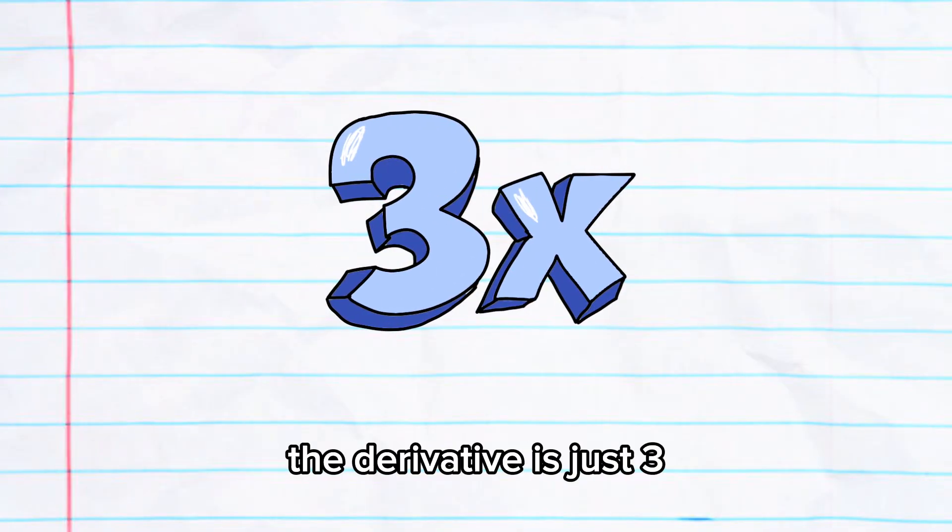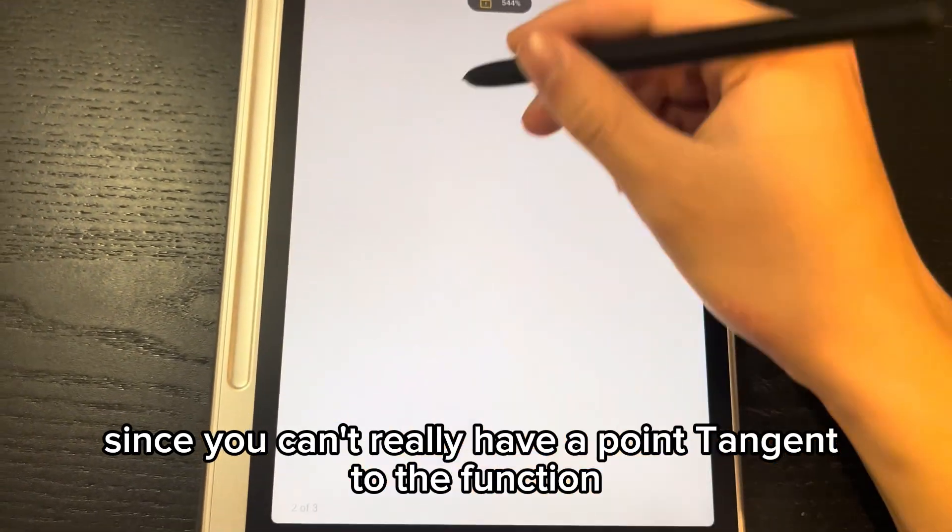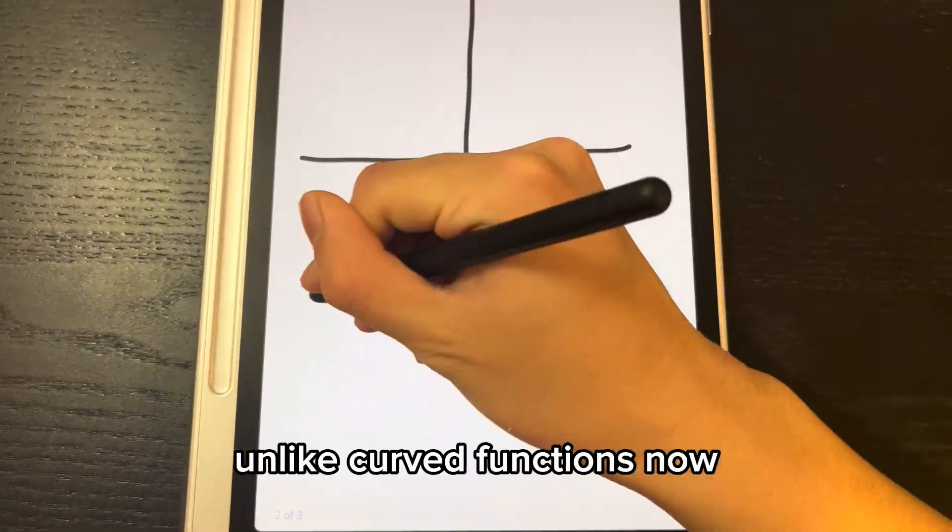For functions like 3x, the derivative is just 3, since you can't really have a point tangent to the function unlike curved functions.